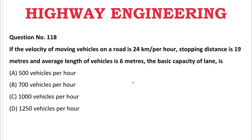Next question: If the velocity of a moving vehicle on the road is 24 km/h, stopping distance is 19 meters, and the average length of vehicle is 6 meters, the basic capacity of a lane is — A: 500 vehicles/hr, B: 700 vehicles/hr, C: 1000 vehicles/hr, D: 1250 vehicles/hr. The correct answer is C, 1000 vehicles per hour.